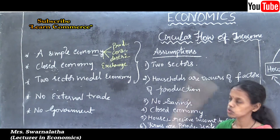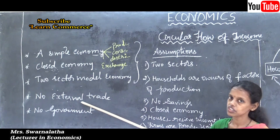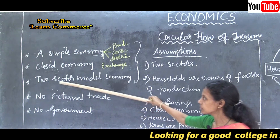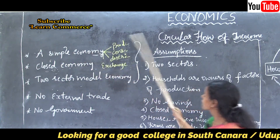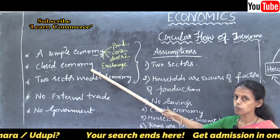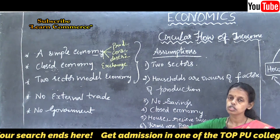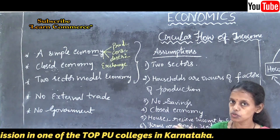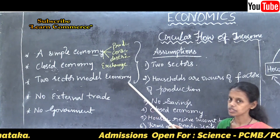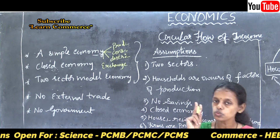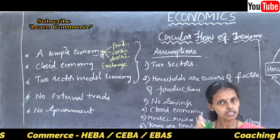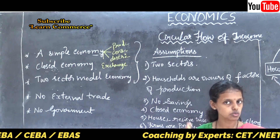A simple economy is nothing but a closed economy — there is no external trade, no international trade, no export and no import. It is a simple, closed economic system. An open economy, by contrast, is one in which external trade takes place through exports and imports. Our simple economy is a two-sector model economy with only household and firm sectors.